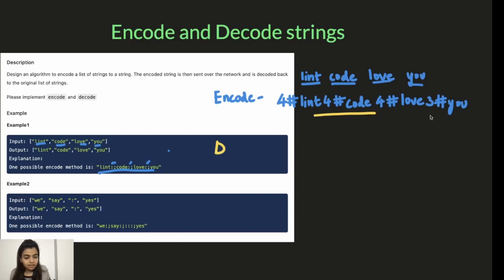Then we will be sending this string as input for decode function. So in decode function, what we will be doing is we write a for loop which will go through the entire string. And every time we find a number followed by a hashtag, then we stop there and we take the number of characters mentioned after the hash. So we will get lint.